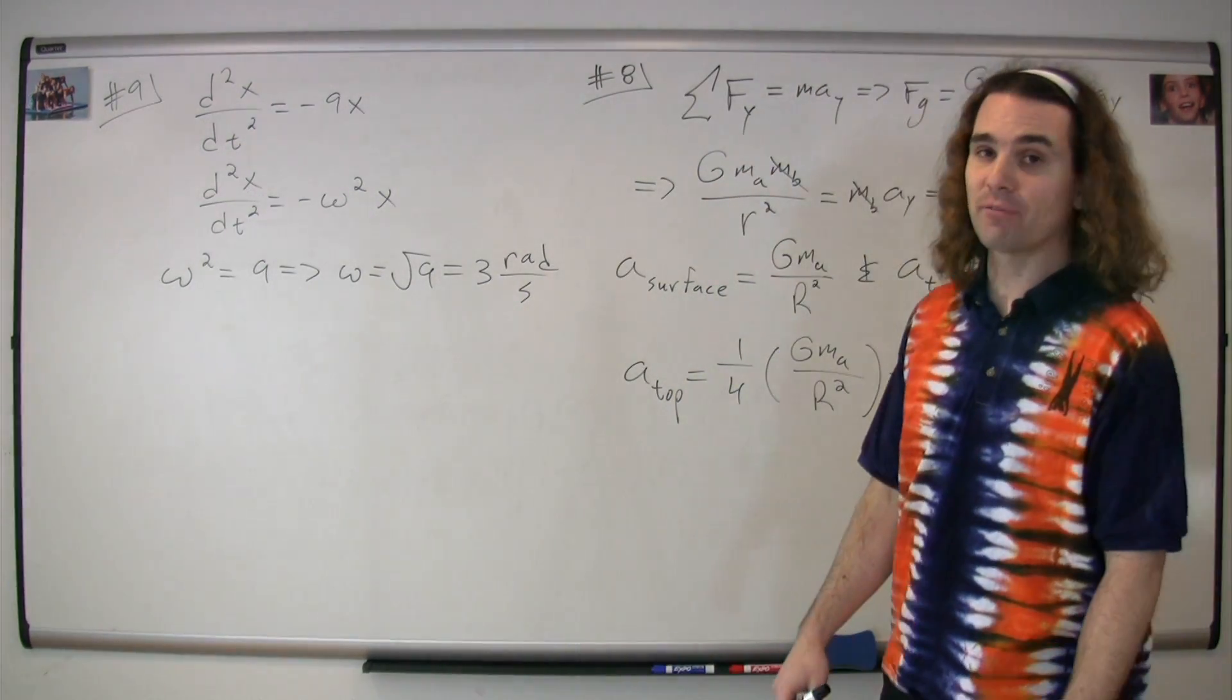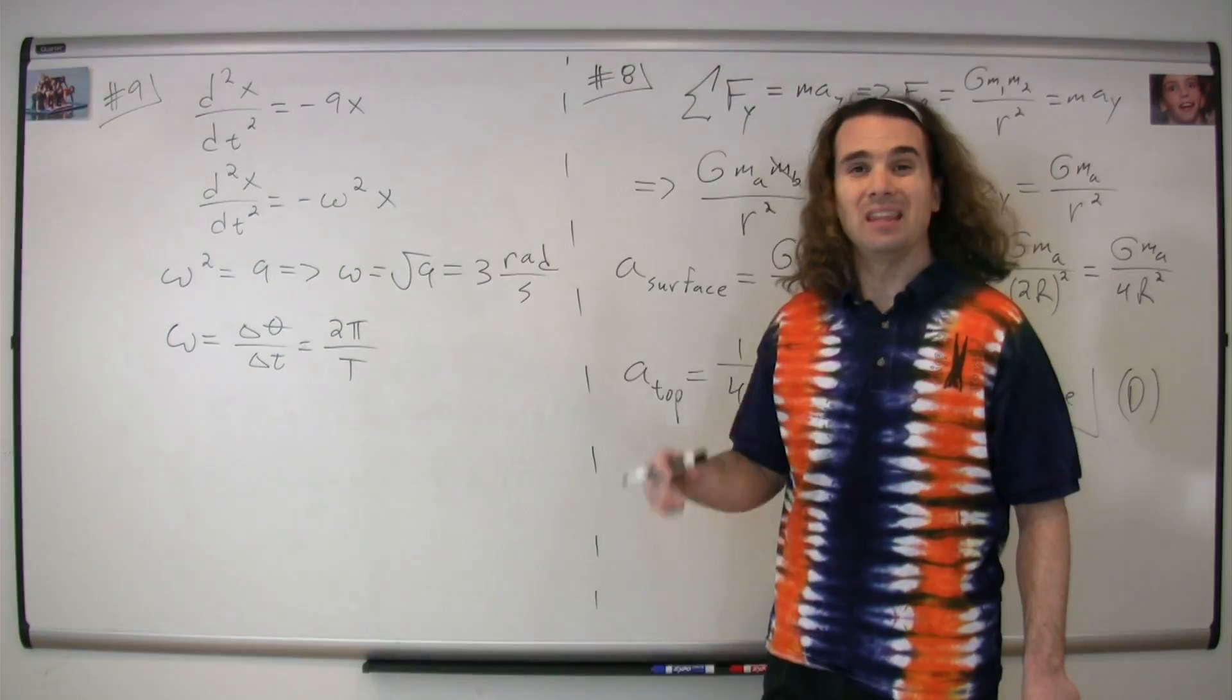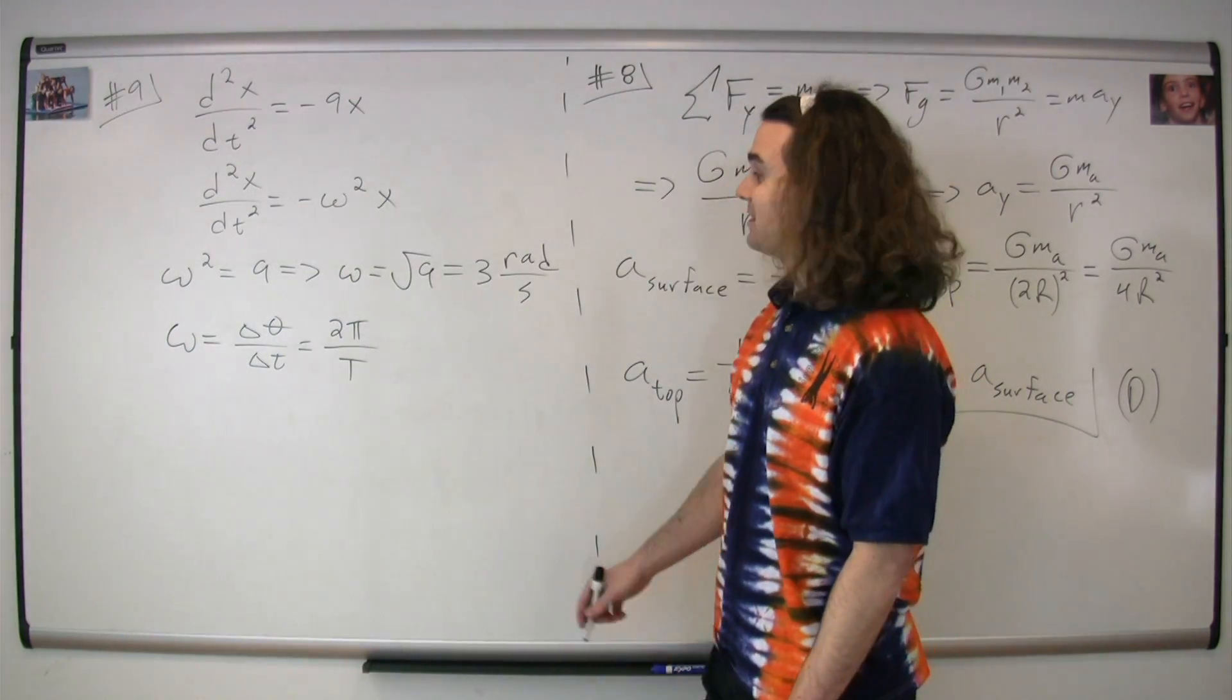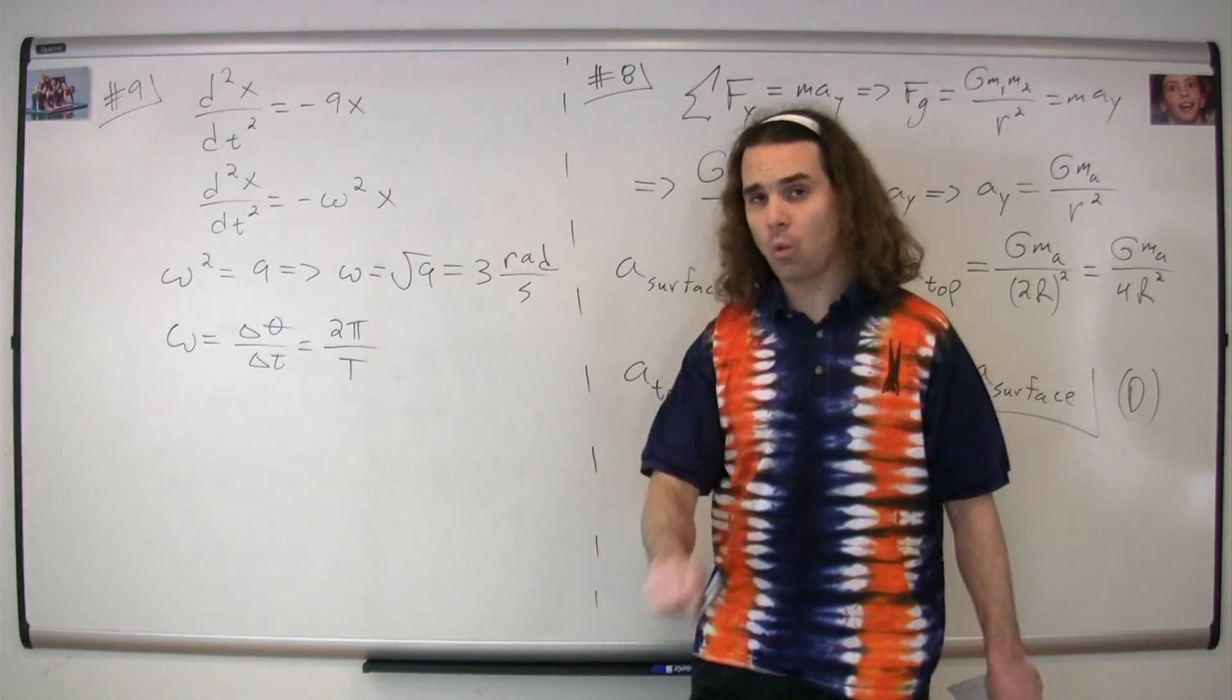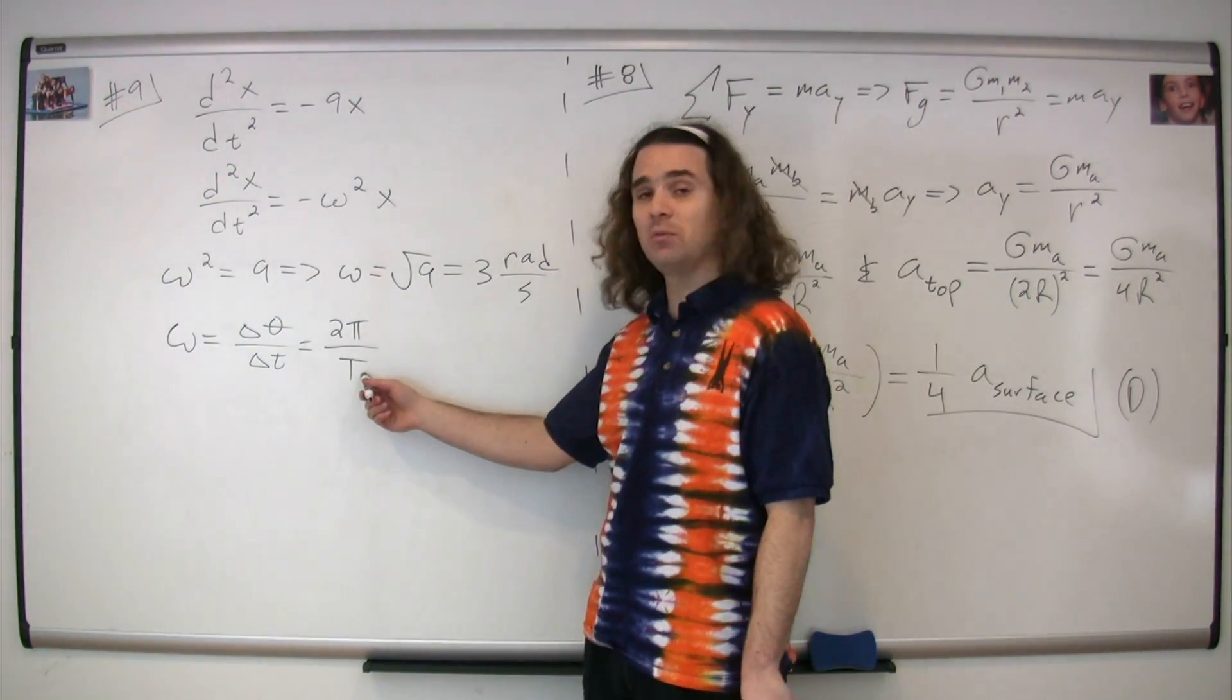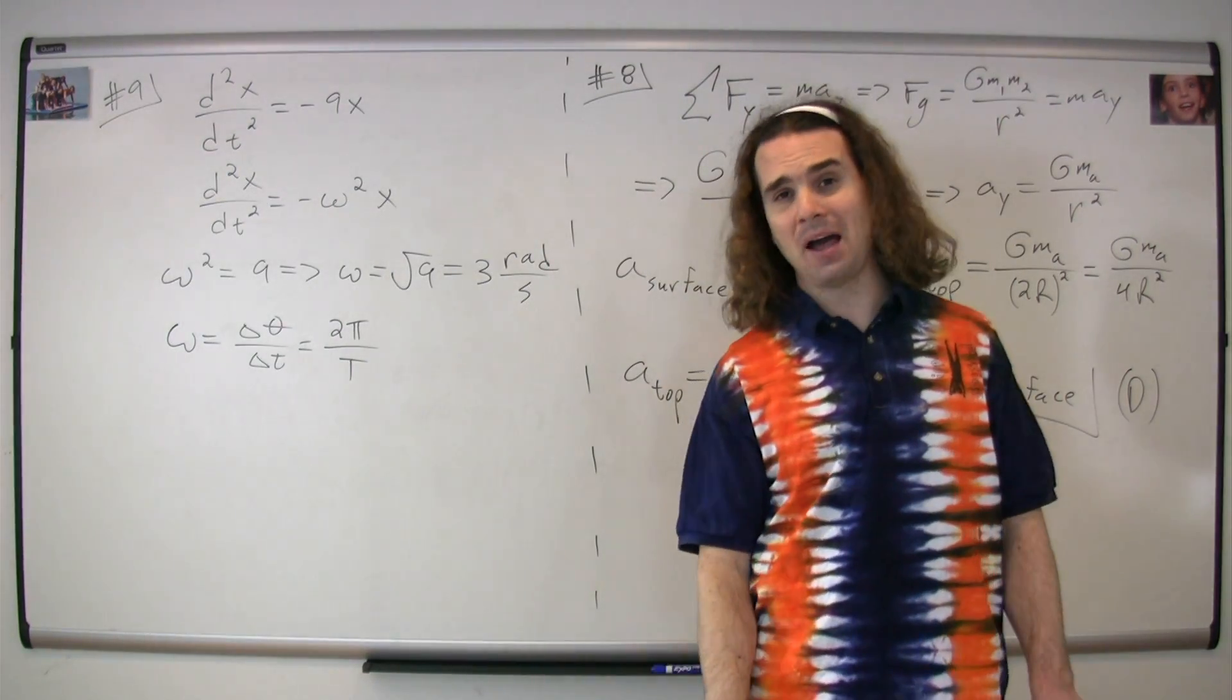The equation for angular frequency or angular velocity is the angular velocity or angular frequency is equal to the change in angular position over change in time. For one full revolution, that time would be the period, or capital T, and the displacement would be two pi radians.